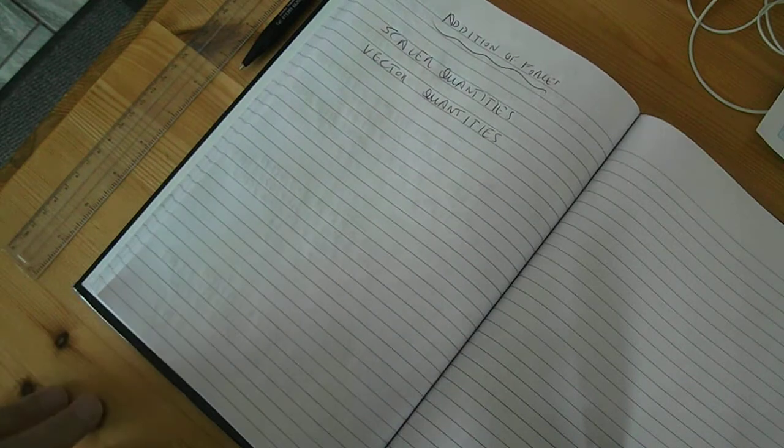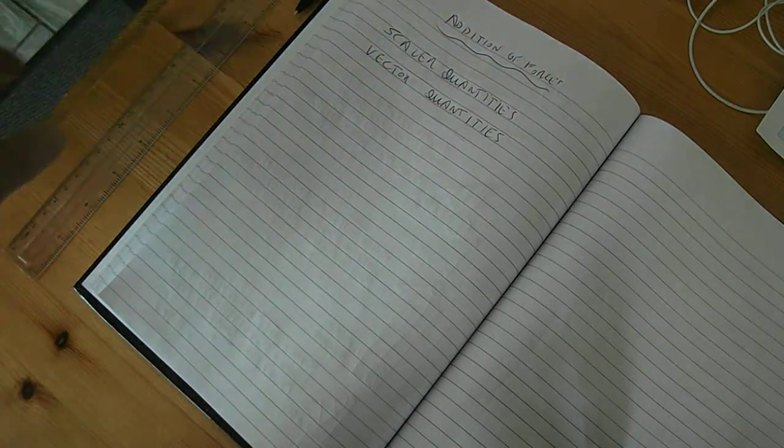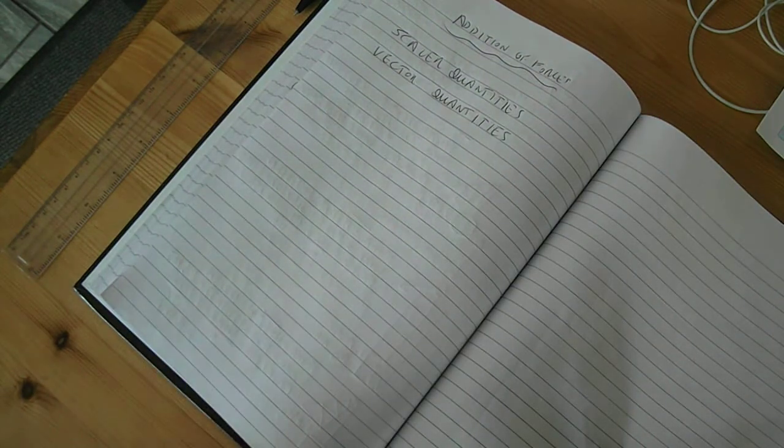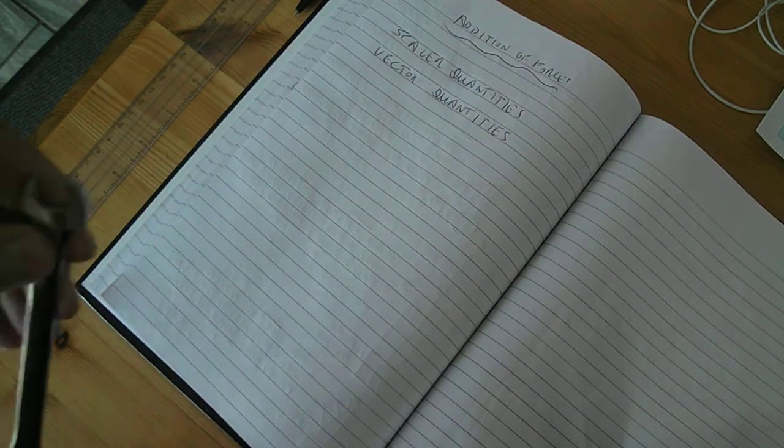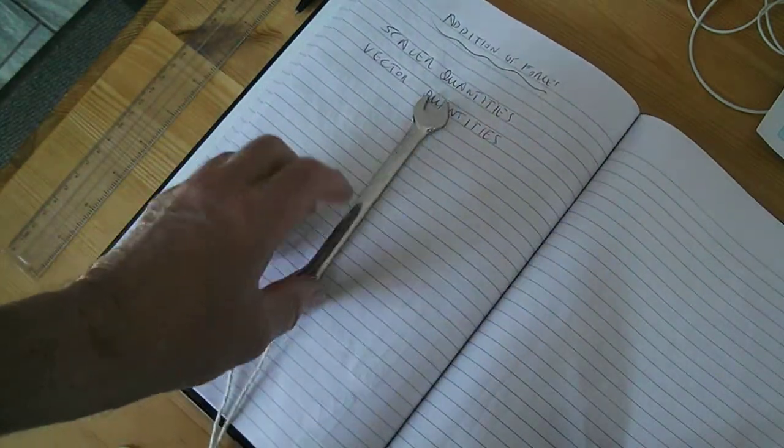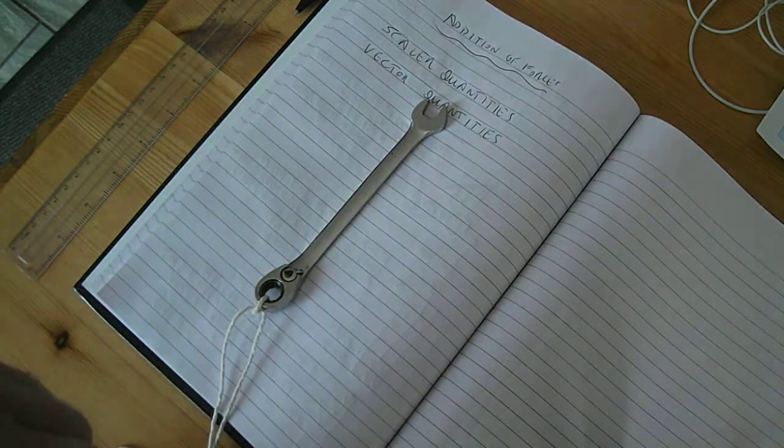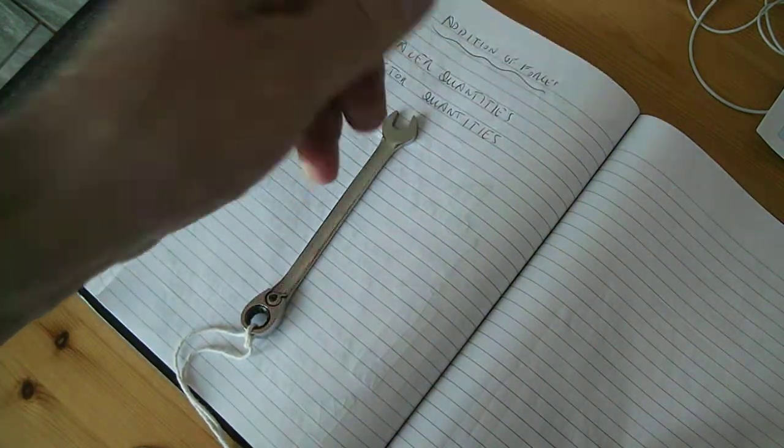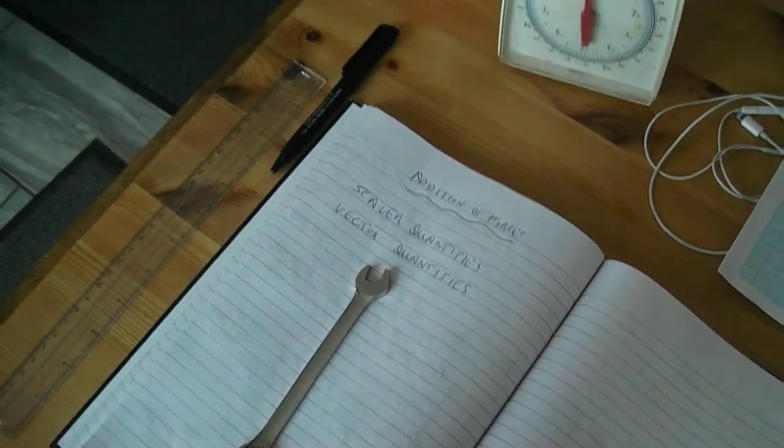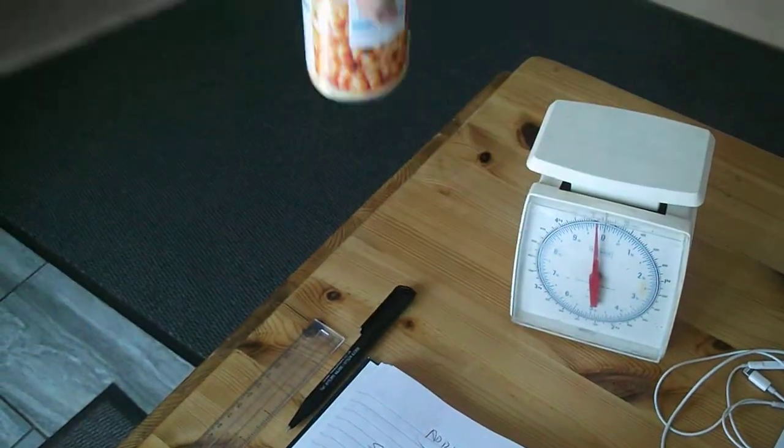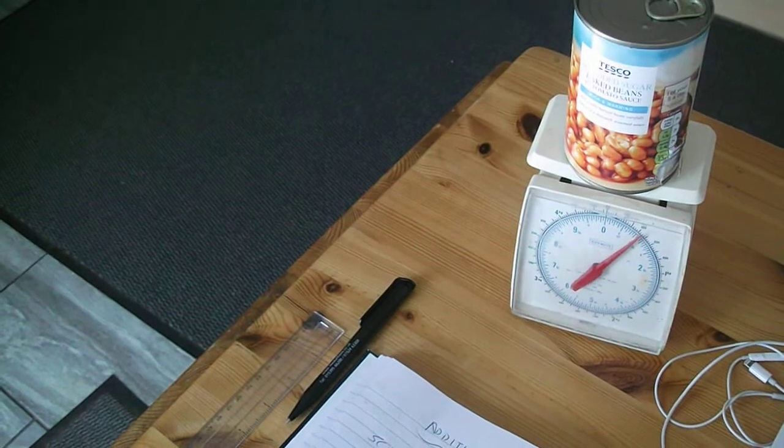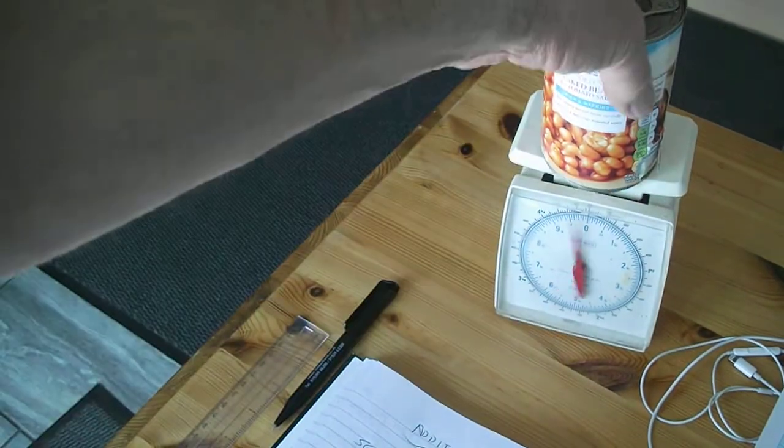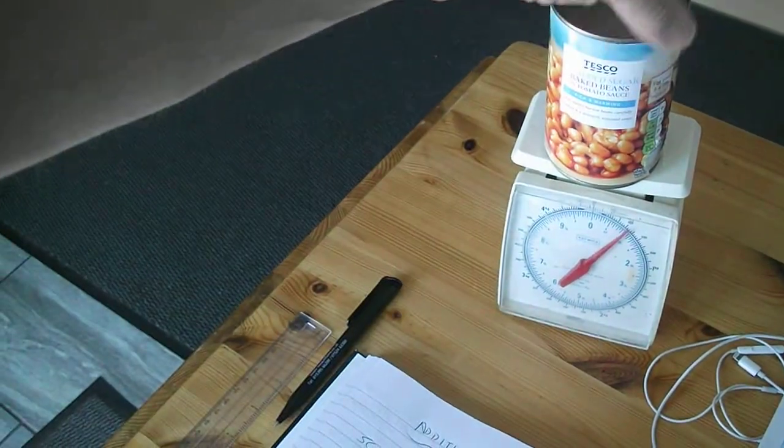In engineering, we're interested in two different types of quantities. One is what we call scalar quantities. For example, if I use this pair of scales here to measure the weight of a tin of beans, this is simply telling me that it has a certain magnitude or size.